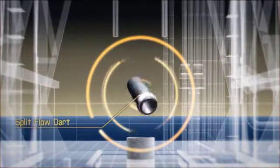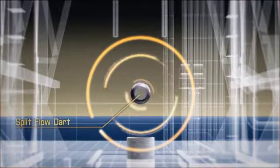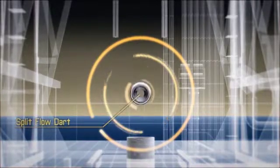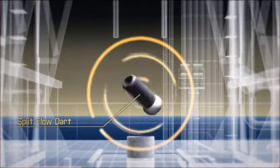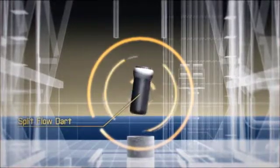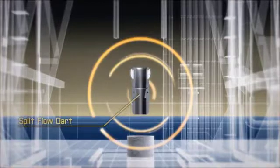The PBL bypass system offers the option to split the flow. A patented split flow dart can be utilized to divert a pre-calculated percentage of the drilling or completion fluid to the annulus, while the remaining fluid continues to flow to the BHA below the PBL tool.